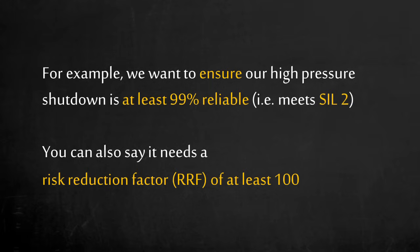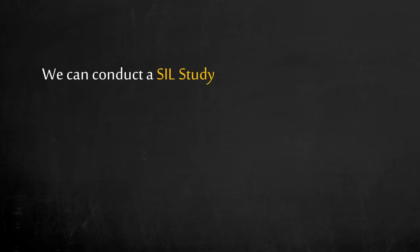We claim that our high-pressure shutdown is at least 99% reliable, or in other words, that it has a risk reduction factor of at least 100. As a safety critical function, we want to ensure it can meet SIL 2. How can we systematically make design and operation decisions to meet the safety integrity level we need? We can conduct a SIL study, which is also called a safety integrity level verification in the IEC standards.